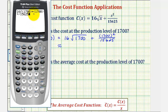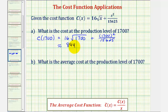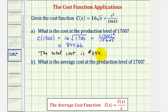I've already entered this in, so if we press enter, to the nearest cent this would be $844.66. So the total cost at this production level is $844.66.